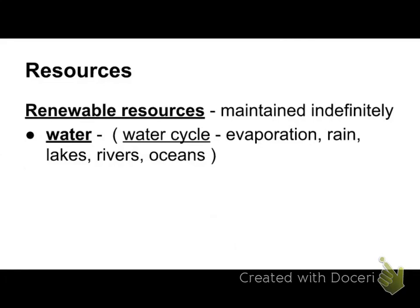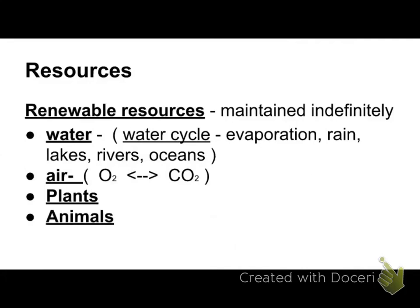We filter out harmful dissolved substances at water treatment plants. Water from drains can be reclaimed or evaporate and be cleaned. Air is renewable because plants use CO2 and produce oxygen, which animals use. Oxygen and CO2 cycle between plants and animals. Renewable resources include plants, animals, and anything that can regenerate.